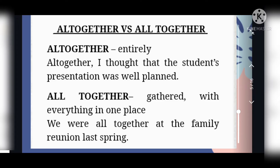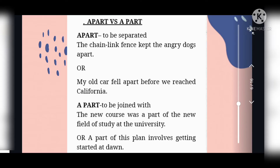The next difference is 'altogether' versus 'all together'. 'Altogether' means entirely. For example: Altogether, I thought that the student's presentation was well planned. The next, 'all together', means gathered or with everything in one place. For example: We were all together at the family reunion last spring.